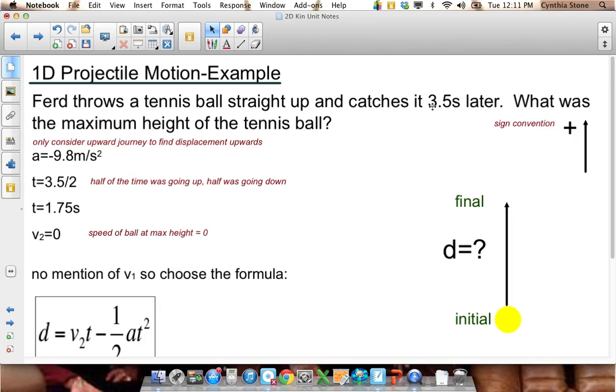Now if you consider the whole portion, that means the displacement of the ball would be zero. So if we want to find the displacement up, then we have to only consider half the trip. So then that means the time is half, 1.75 seconds, and we know that its speed at the top is zero. I'm going to assume in this case that up is positive, though down could be positive too, that would be fine.